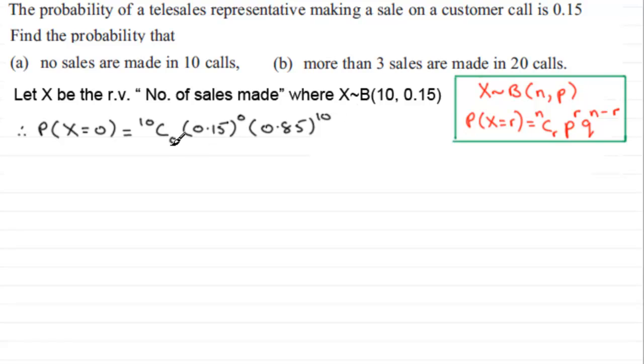The 10C0 is 1, 0.15 to power 0 is 1, so really this is exactly the same as just working out 0.85 to the power 10. And if you work that out, you end up with 0.19687 and so on.